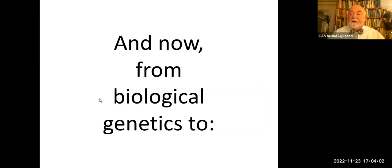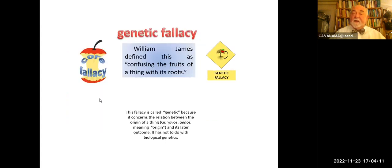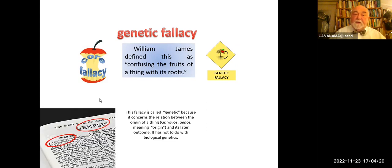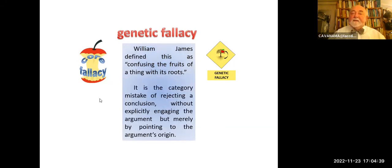And now, from biological genetics to what's called the genetic fallacy, which consists in confusing the fruits of a thing with the roots of a thing — that's the difference from William James. Incidentally, the fallacy is called genetic because it comes from the Greek word genos, which means beginning — so looking for the origin of something. It's not strictly biological; it's in the same sense that the book of Genesis was called Genesis from that same Greek root — in the beginning, this is the book of beginnings. So the genetic fallacy is looking at the beginning or origin of a claim in order to evaluate it. It's the category mistake of predicting your conclusion without explicitly engaging the argument, merely pointing to that argument's origins.